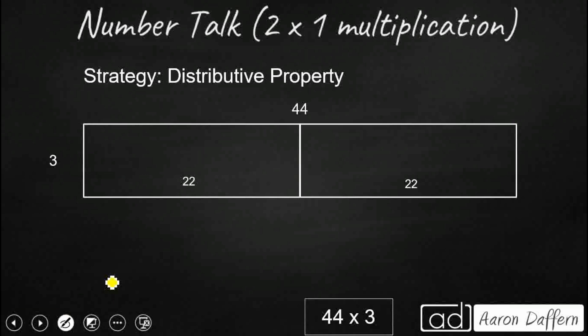Alright, so one way we can do it is using the distributive property. The distributive property lets us break apart this 44 times 3. What we're going to do is break it up into 22 plus 22, cutting it in half basically. So we're going to say 44 is really 22 plus 22.